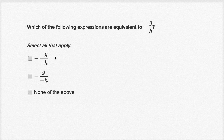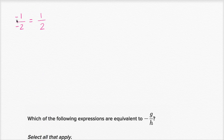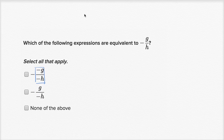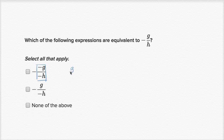Select all that apply. So this has all sorts of negatives. We need to realize that negative g over negative h — we've already figured that out. If you have a negative divided by a negative, that's the same thing as the positive value divided by the positive value. So negative g over negative h is the same thing as g over h, and then you still have this negative out front. So this one is actually equal to negative g over h. Negative divided by negative is a positive, and you still have this negative out here.